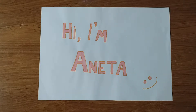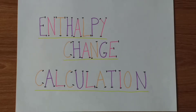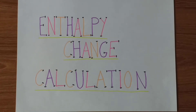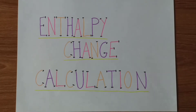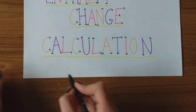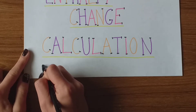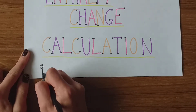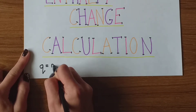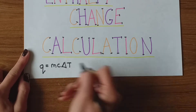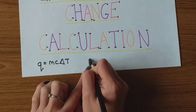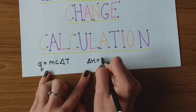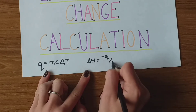Hi, this is Chemistry at Glance and my name is Aneta. In today's video, we're going to practice some past papers on enthalpy change calculation. If you're not sure what this is, it's these calculations: q equals mc delta T, and the enthalpy change equals minus q over n.